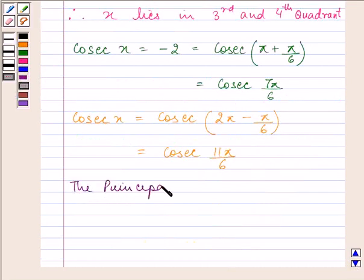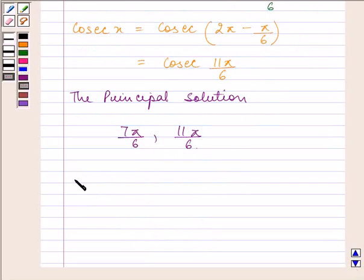The principal solution of x in the third quadrant is 7π by 6, and in the fourth quadrant it is 11π by 6. Proceeding on to find the general solution, x equals...